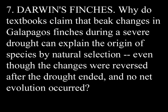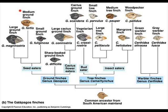Number 7: Darwin's Finches. Why do textbooks claim that beak changes in Galapagos finches during a severe drought can explain the origin of species by natural selection, even though the changes were reversed after the drought ended and no net evolution occurred? So Darwin's finches are all descended from the same common ancestor, but they have different shape and size beaks depending on the foods they eat. Short-term studies have shown that depending on the availability of food, finches' beaks will change slightly — a severe drought can reduce them to eating harder seeds so only larger-beaked finches survive — but then when the drought ends, they go back to normal.